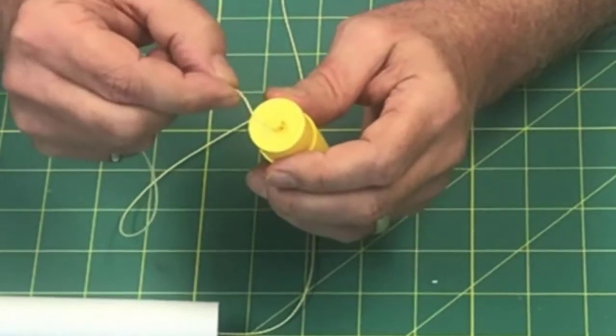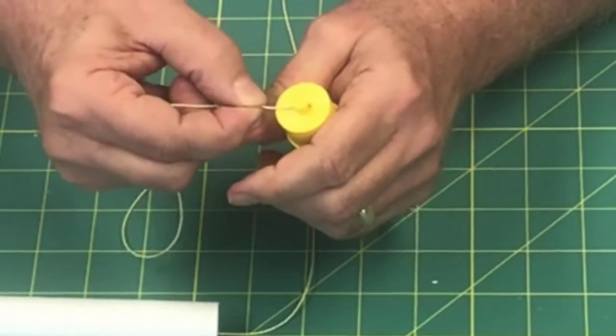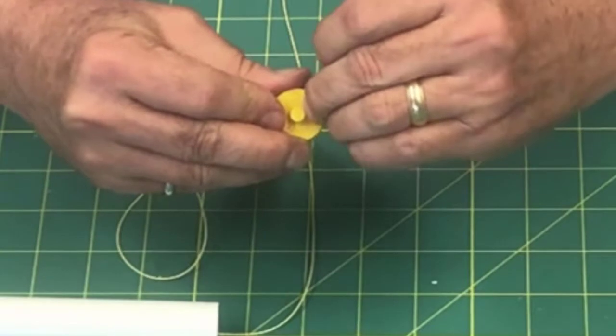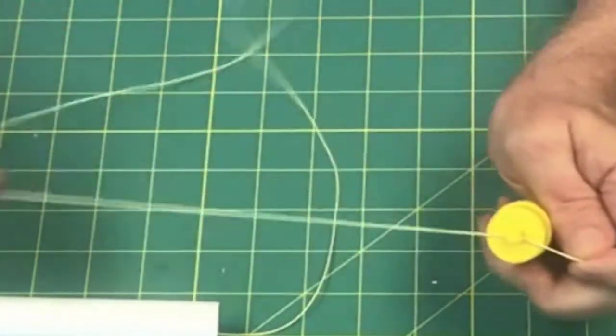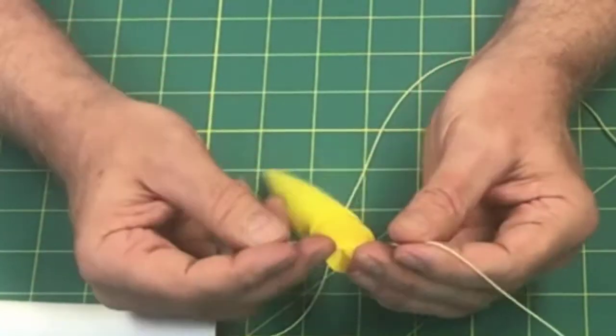This can be kind of tricky to do sometimes, but just get it until it comes through there. Okay, so I've got my cord on there. Now you want to tie a really nice square knot on that.